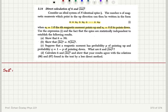Use this expression and the fact that the spins are statistically independent to establish the following results: n̄ equals N·ū, and the dispersion of n equals N times Δu²̄. Suppose a magnetic moment has probability p of pointing up and q of pointing down. Find ū and Δu²̄, then calculate n̄ and Δn²̄, and show that the results agree with the text derived by a less direct method.